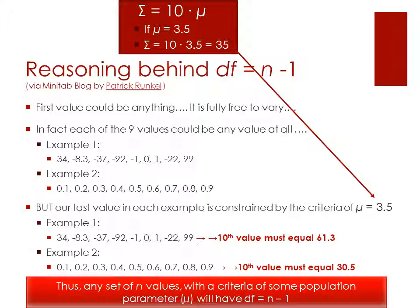So for any set of n values with a criteria of some population parameter, here we're using means, we're using μ, but keep in mind we could do this for a proportion or a standard deviation. In any of those cases, it's going to have a degrees of freedom of n minus one because that last variable is not free to vary. It is constrained by having to make sure that the rest of the sample meets the criteria set by the population parameter that we are testing.